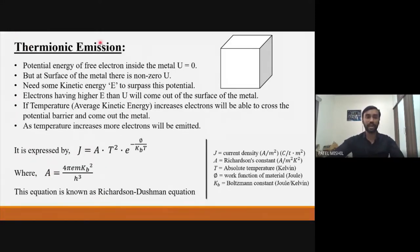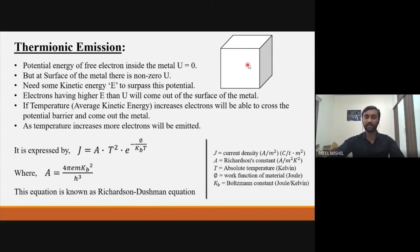First, what is thermionic emission? Consider a metal cube — inside it there are many free electrons moving randomly with some kinetic energy. Since they are free electrons their potential energy will be zero, but at the surface there will be some non-zero potential energy. It is the same case as a liquid drop.